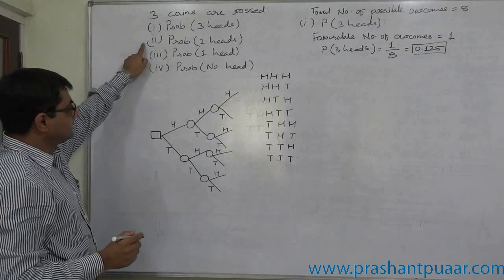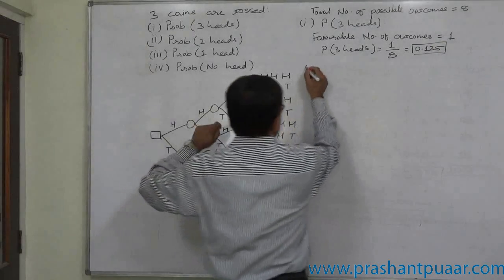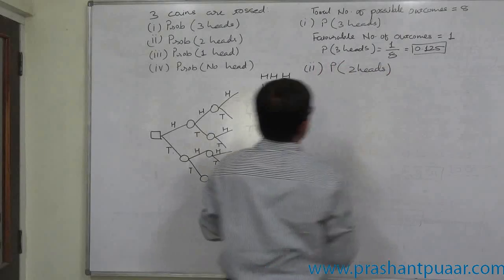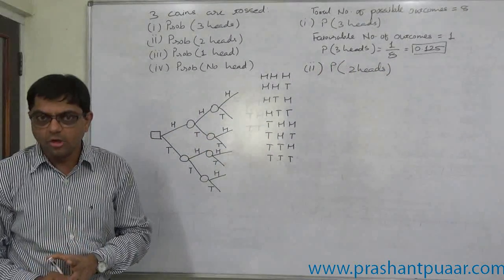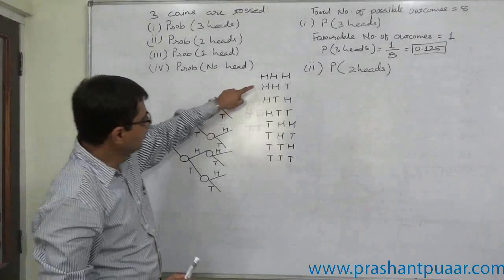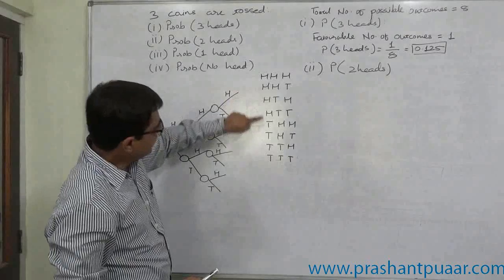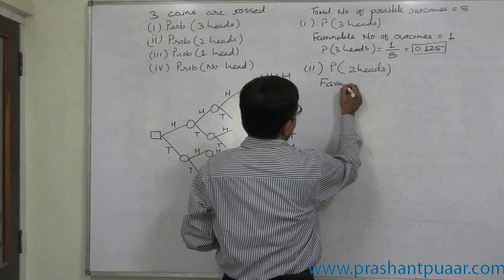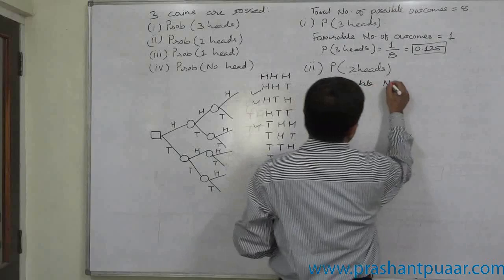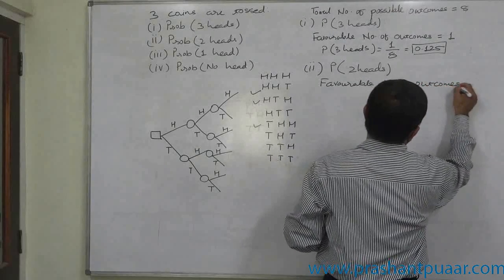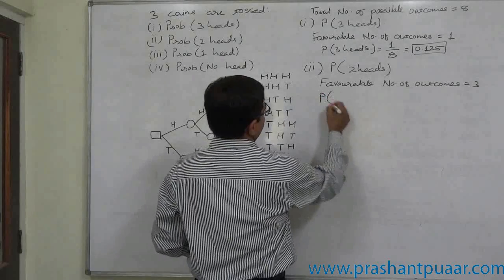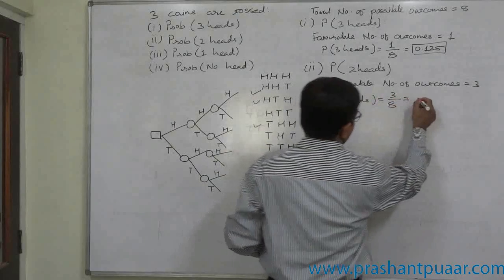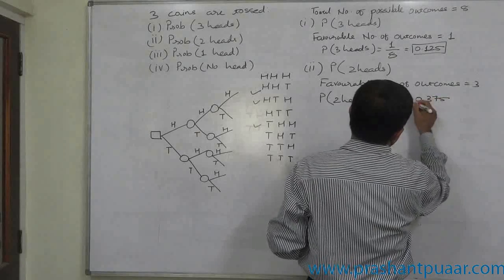Now let us take the second case — be alert in this case. Probability of two heads: how many favorable outcomes are possible? One, two, three — these three are the possible favorable outcomes. So favorable outcomes equal three, and therefore probability of two heads equals 3/8, or 0.375.